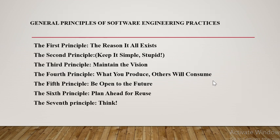We have seven principles in software engineering practices. The first principle is 'the reason it all exists.' What they are trying to say is: if the project does not add real value to the system, we are not supposed to do it. All other six principles support this first principle.